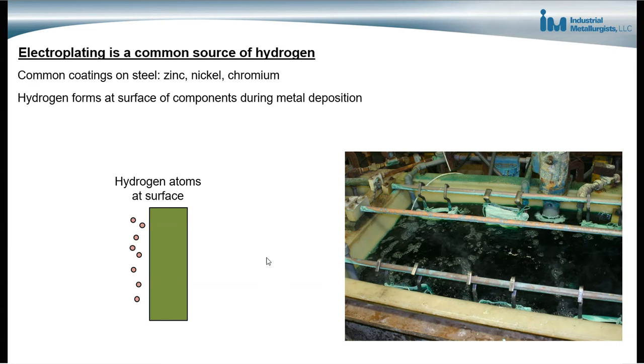With steel fasteners, quite often they are coated with a metal for corrosion protection. Some common metals that are used for corrosion protection include zinc, nickel and chromium. During the electroplating process, hydrogen atoms are present, will form at the surface of the metal. And those hydrogen atoms can diffuse into the metal. And this shows a plating bath on the right. So as I mentioned, these common coatings are zinc, nickel and chromium.